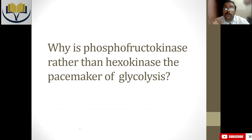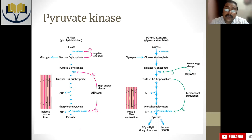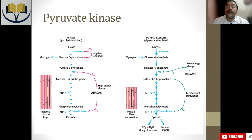The question of why phosphofructokinase rather than hexokinase is the pacemaker of glycolysis is left for you to answer in the comment section. The third enzyme, pyruvate kinase, can be considered under two different conditions: when a person is at rest and when a person is exercising. In the resting phase, glycolysis is in an inhibited condition — body energy demand is already fulfilled, ATP-AMP ratio is on the higher side, and ATP inhibits both phosphofructokinase and pyruvate kinase.